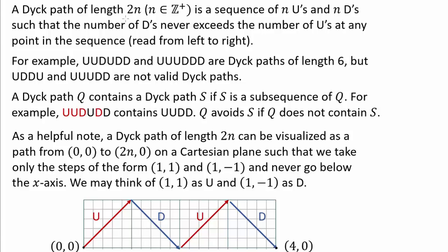A Dyck path of length 2n, where n is a positive integer, is a sequence of n U's and n D's such that the number of D's never exceeds the number of U's at any point in the sequence read from left to right. For example, UUDUDD and UUUDDD are Dyck paths of length 6 — we have 3 U's and 3 D's, totaling 6 — and as we read from left to right, we always have greater than or equal number of U's compared to D's.